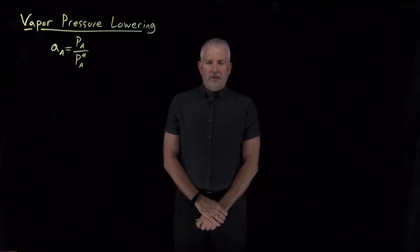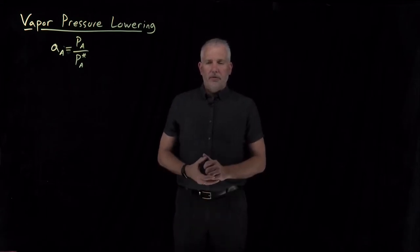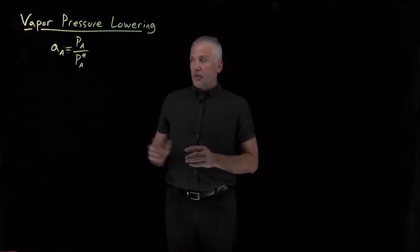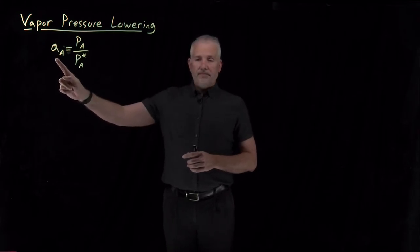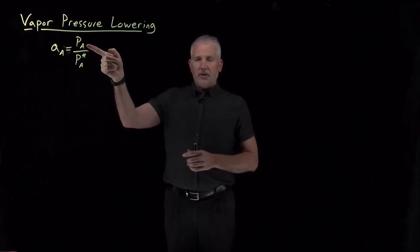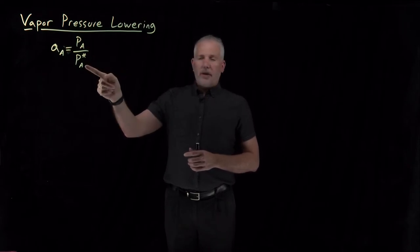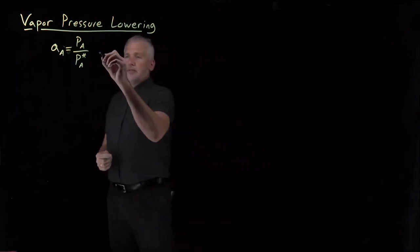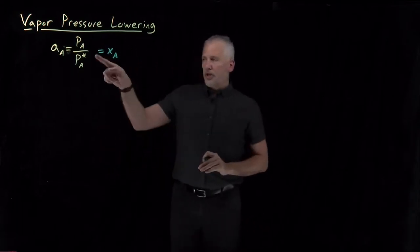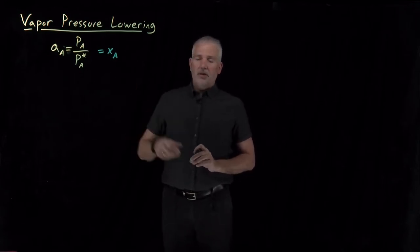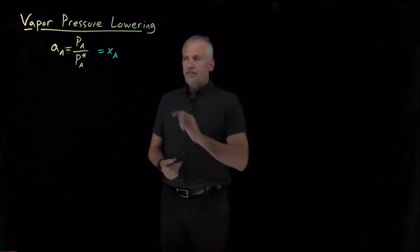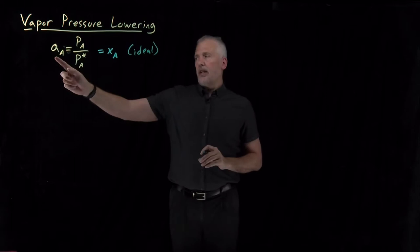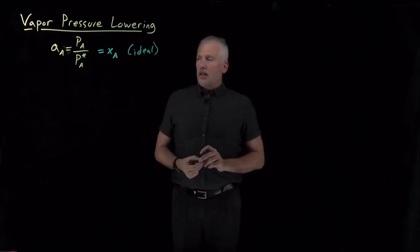Let's talk a little more about the liquid-vapor equilibrium for a mixture of two substances. For a non-ideal solution, we've defined a quantity called the activity, which is the partial pressure of some substance over the liquid divided by the vapor pressure it would have if it were a pure solvent. If the solution is ideal, that ratio equals the mole fraction of that component. If it's not ideal, we use the activity, which may or may not be the same as the mole fraction.